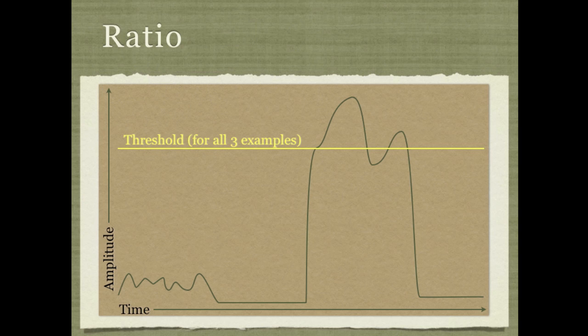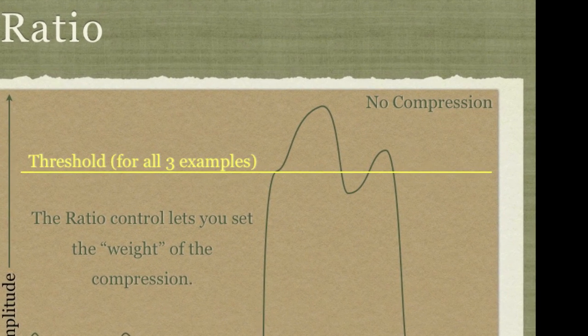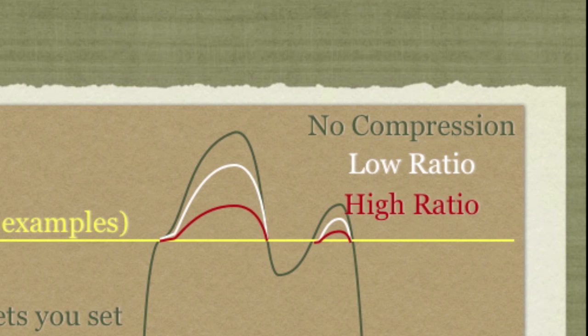Now so far we've looked at changing the threshold while keeping everything else the same in the compressor. Now let's look at changing the ratio. A helpful metaphor is that the ratio is almost like the weight of the compression. So for example, if the ratio is set at its minimum in most compressors, that means it won't do anything. It'll be no compression above the threshold, and it'll be more or less as if the sound had not gone through a compressor at all. If you turn the ratio up slightly to a low ratio, it will compress the sound a little bit, like you see on the white line. If you turn the ratio up higher, it'll compress the sound more, like you see on the red line.